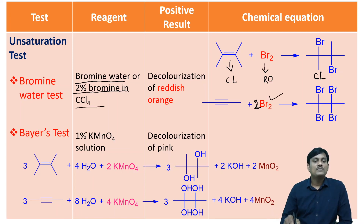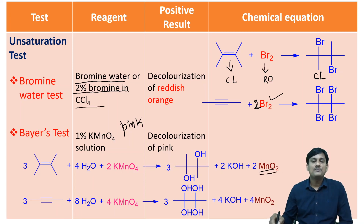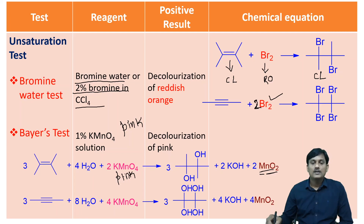In Baeyer's test, the reagent is 1% KMnO4 solution. The color of this solution is pink. When you treat Baeyer's reagent with alkene, there is a formation of 1,2-diols and also a formation of a brick red precipitate — that is, manganese dioxide. So the pink color KMnO4 will be converted into brick red manganese dioxide.